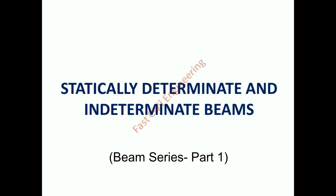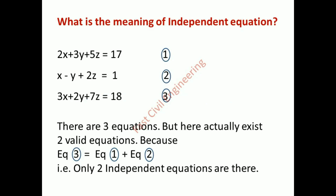Statically determinate and indeterminate beams. What is the meaning of independent equations? There are three equations, but here actually only two valid equations exist, because equation 3 equals equation 1 plus equation 2. That is, only two independent equations are there.